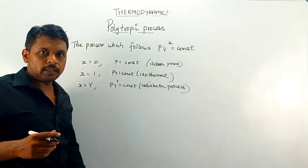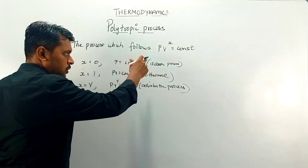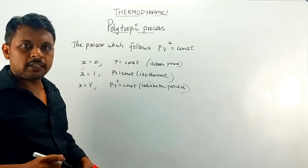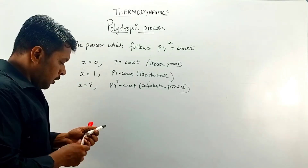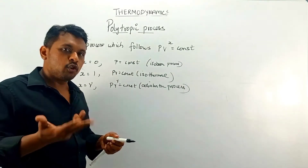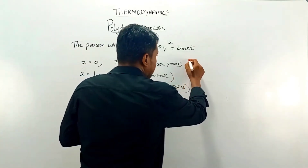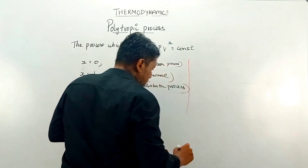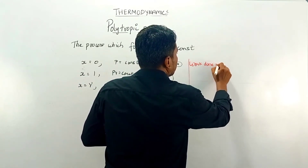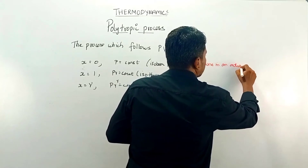For different values of x we can determine the equations for real-life processes. For these specific values we get ideal equations, and for different values of x we get different equations. Now let's find the work done in a polytropic process. Before deriving that expression, we will first write the work done in an adiabatic process.